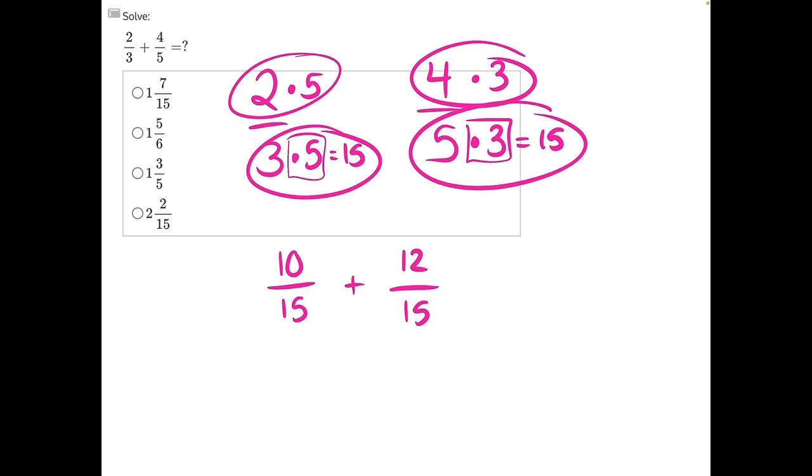And now that we have the same denominators, we can add these fractions. 10 plus 12 in our numerators will give us 22, and the denominators will simply stay the same. We'll have a denominator of 15.